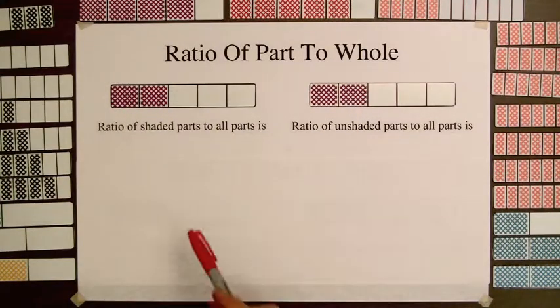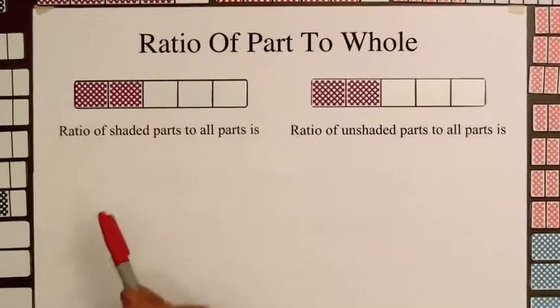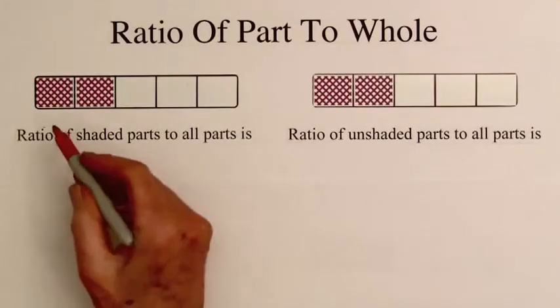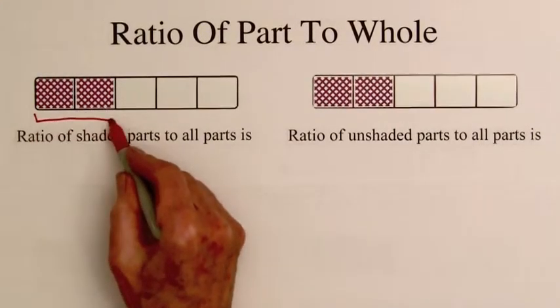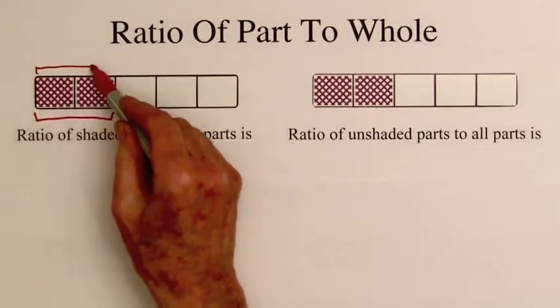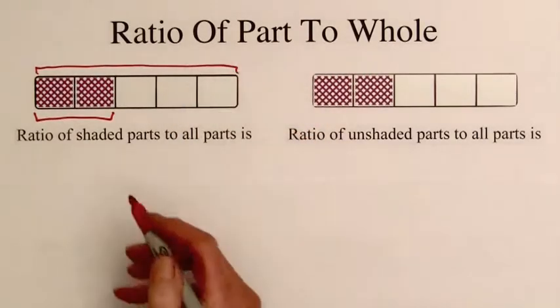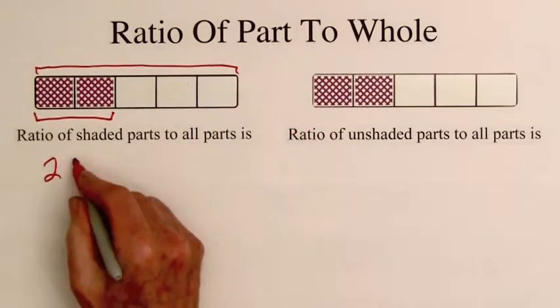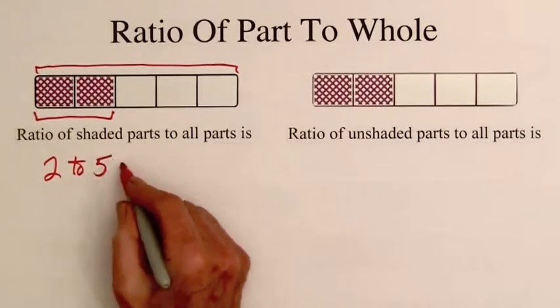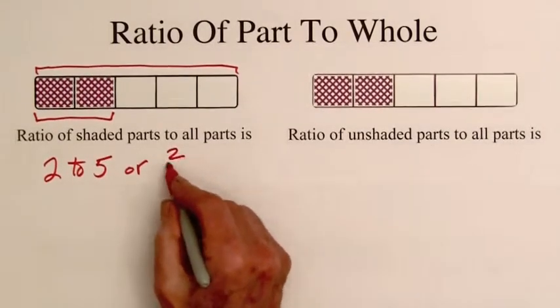Ratios can be used to compare the parts of a fraction bar to the whole bar. The ratio of the number of shaded parts to the total number of parts is 2 to 5, or 2 fifths.